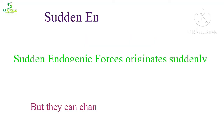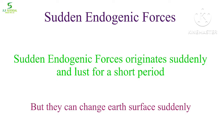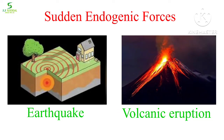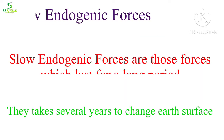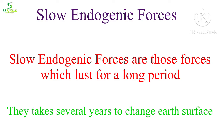Endogenic forces can be classified into two types: sudden forces and slow forces. Sudden forces are those which last for a short period but result in huge changes on the earth's surface. For example, earthquake and volcanic forces last for a short period but can change the earth's surface suddenly.